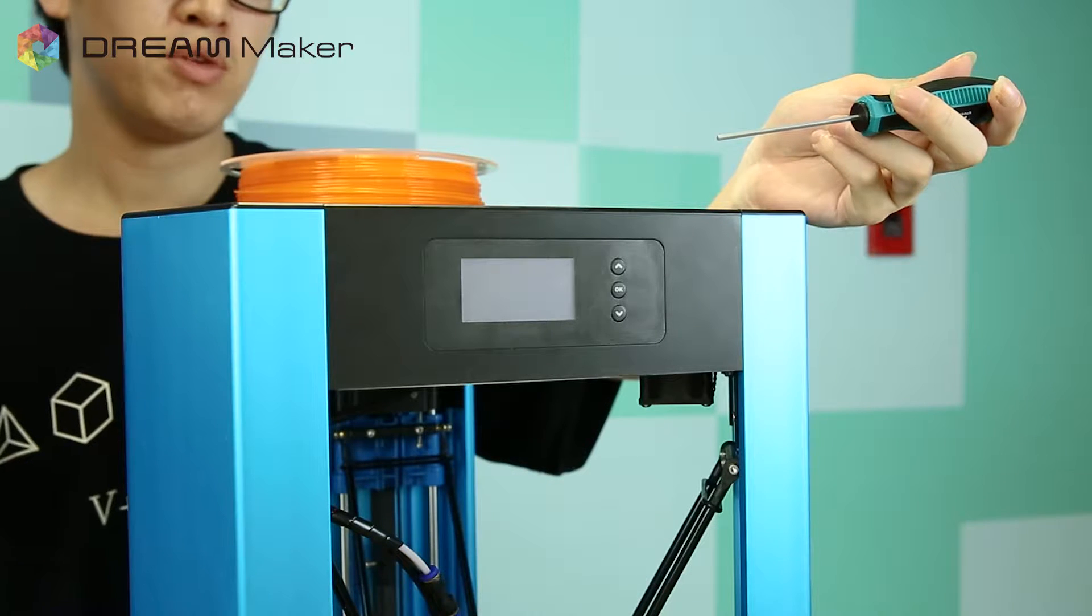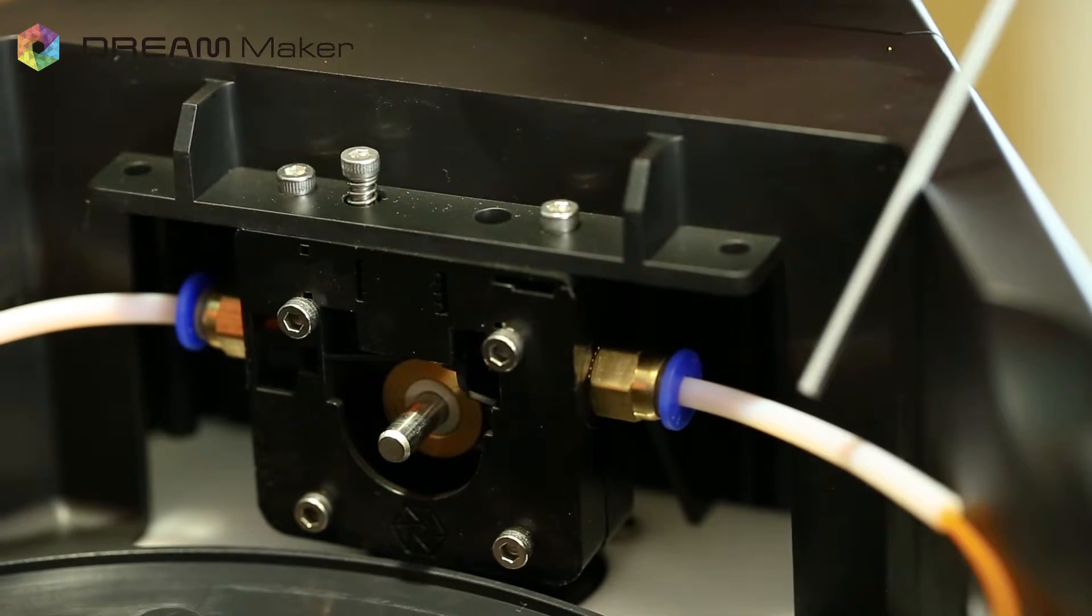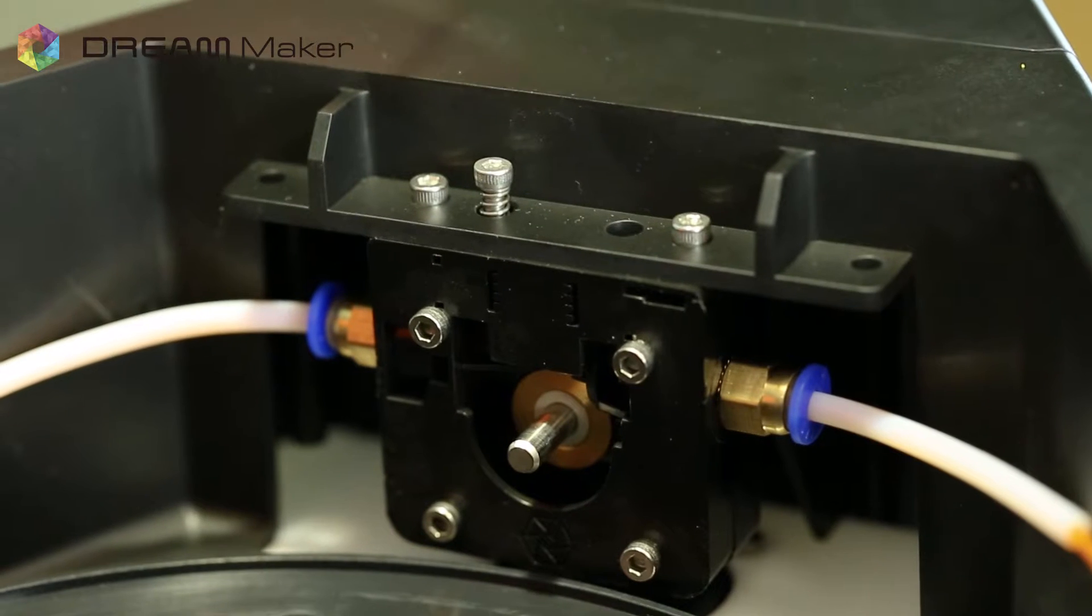To disassemble the extruder, we have to know the three most important parts: the filament inlet, the filament outlet, and the pressing screw.